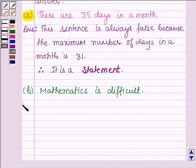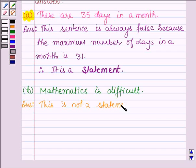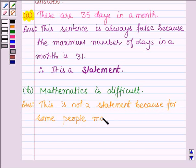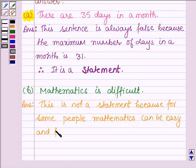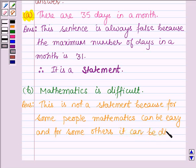Therefore, our answer is: this sentence is not a statement. It is not a statement because for some people mathematics can be easy, and for some others it can be difficult. This completes the second part.